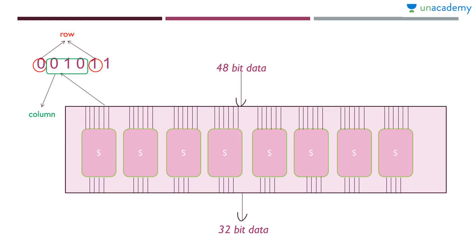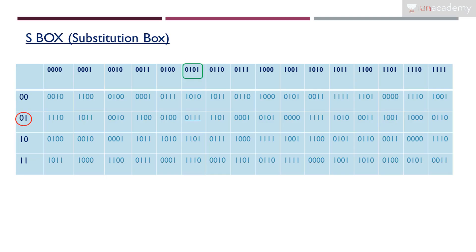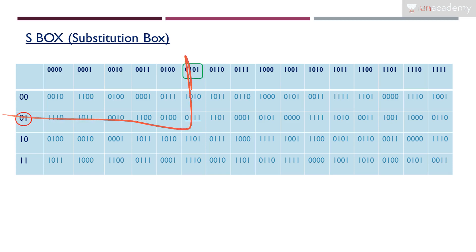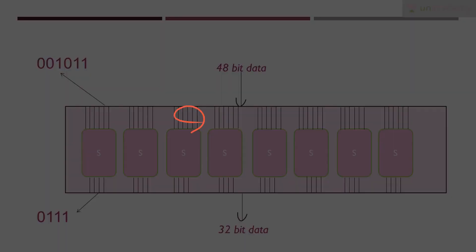This is the column and this is the row. I need to find the intersection — the corresponding 4 bit value at that intersection is 0,1,1,1. So the 6-bit input 001011 became the 4-bit output 0111. Similarly, all the 6-bit blocks will be converted to 4 bits, resulting in a 32 bit data overall.